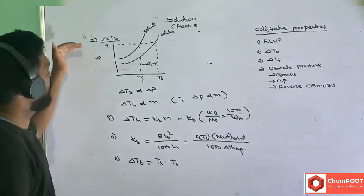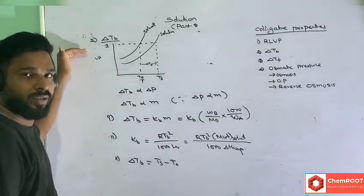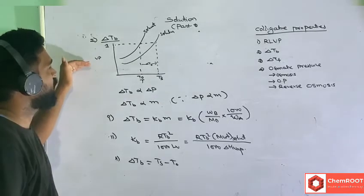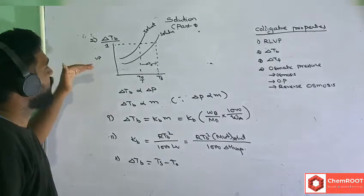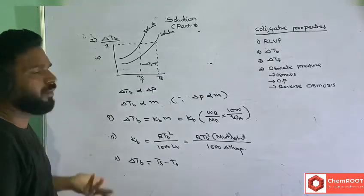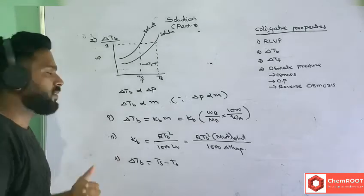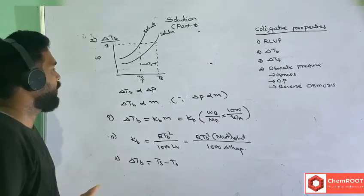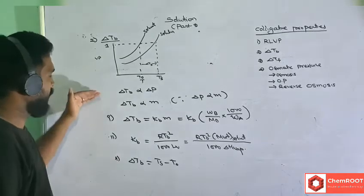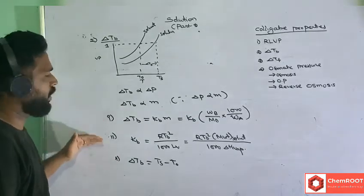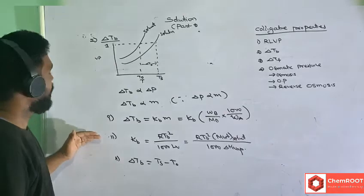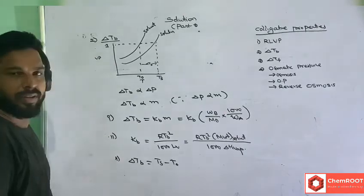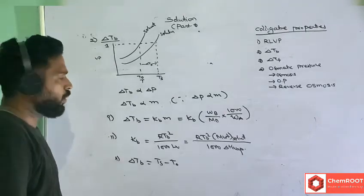When you add a non-volatile solute, the vapor pressure of the solution decreases, and therefore the boiling point increases. This increase is what we call the elevation in boiling point, with the key expression ΔT_b = K_b × m.